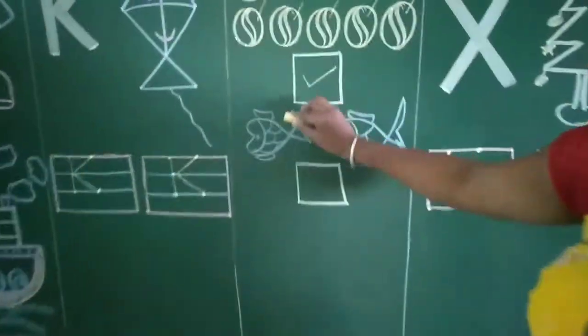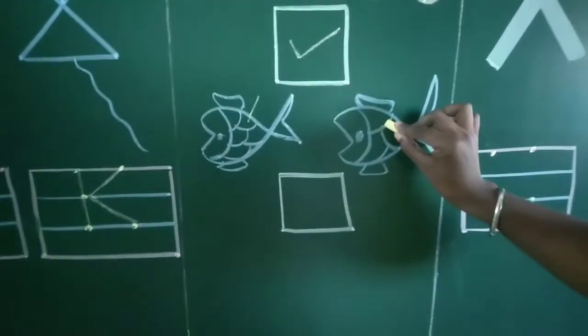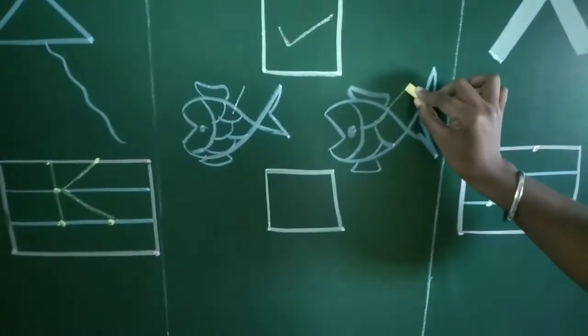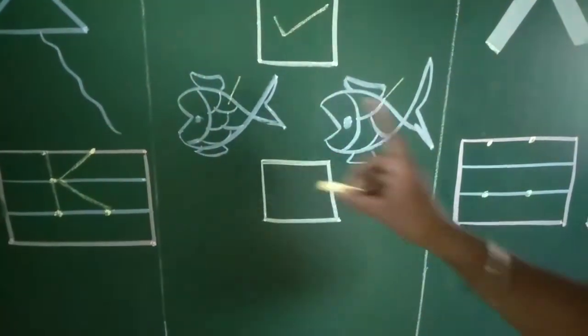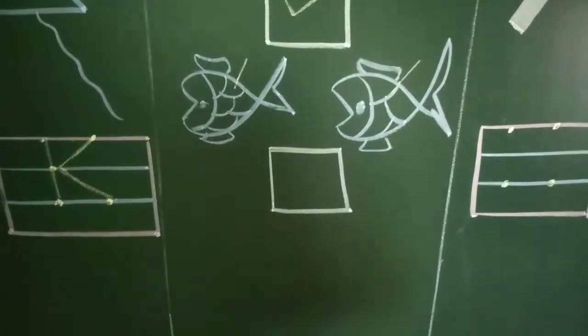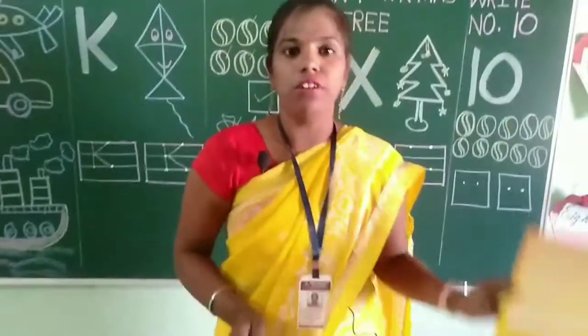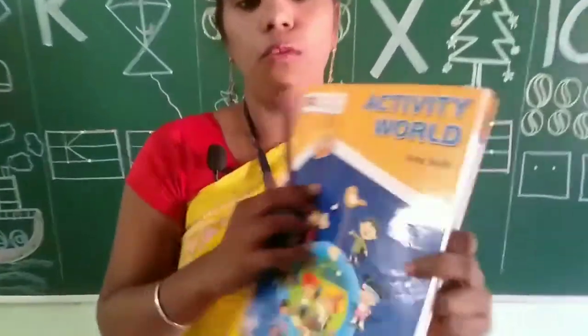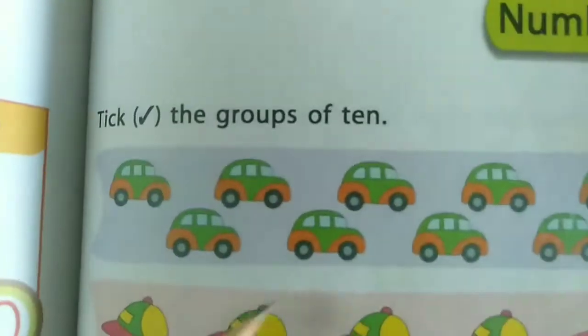Next, we will count the fish: one, two. Is there ten? No. Only two fish are there, so we will not tick here. This topic teacher told you in Activity World 1A book page number 131. Here also some objects are there.